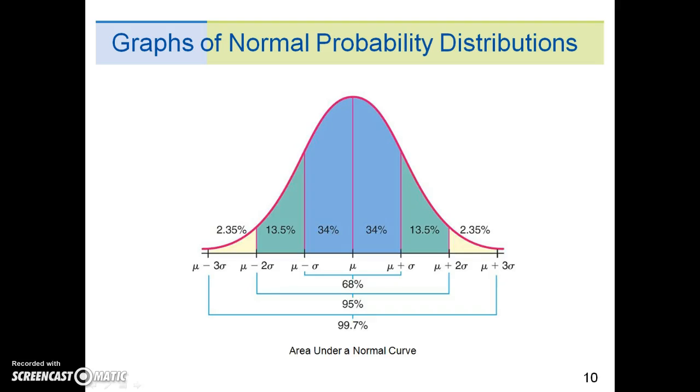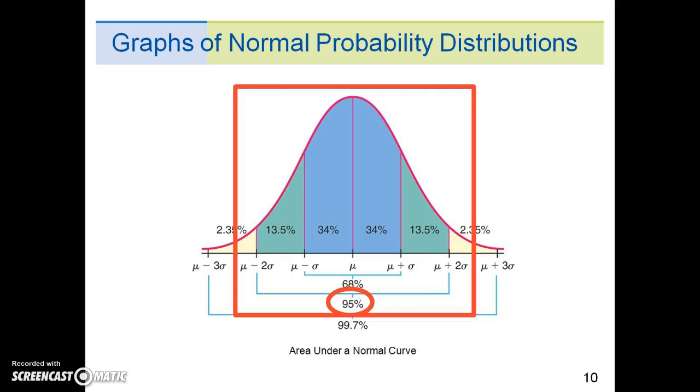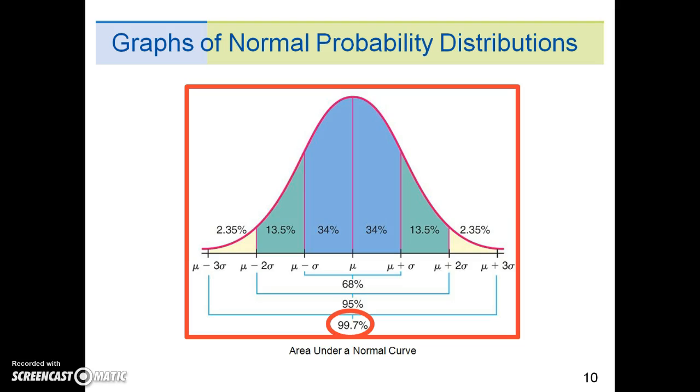This graph provides a visual for the empirical rule. Again, 68% of the data values are within plus or minus one standard deviation of the mean. 95% of the values are within two standard deviations of the mean. 99.7% of the values are within three standard deviations of the mean.